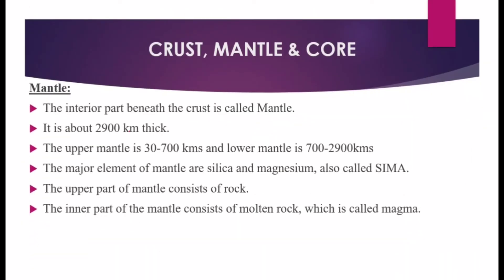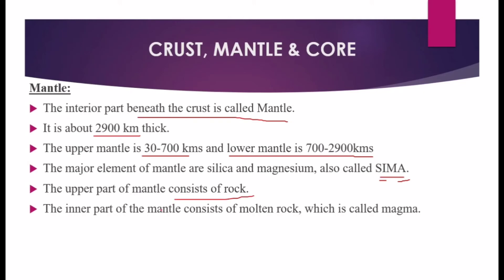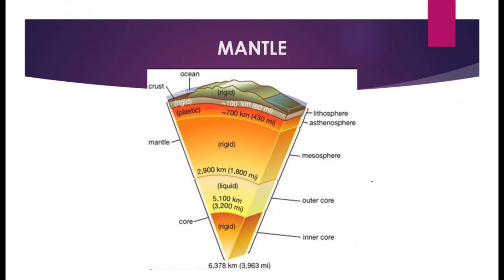The mantle is the interior part beneath the crust. It is about 2,900 kilometers thick. The major elements of the mantle are silica and magnesium — SIMA. The upper mantle extends from 30 to 700 kilometers depth. The upper part of the mantle consists of rock, while the inner part consists of molten rock, which is called magma.